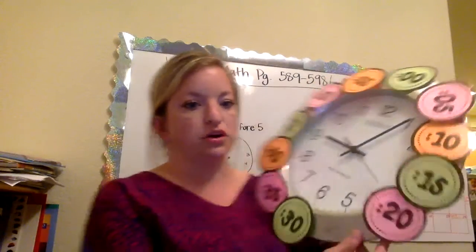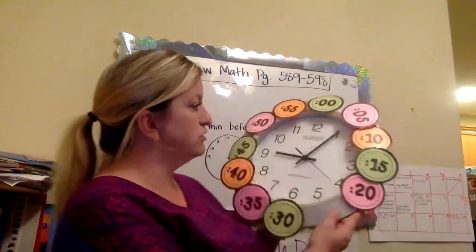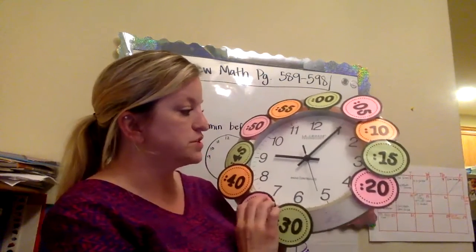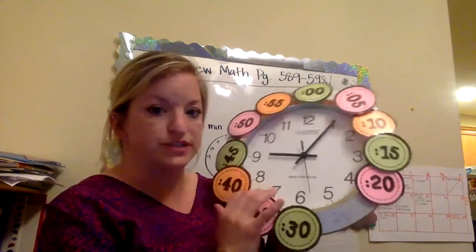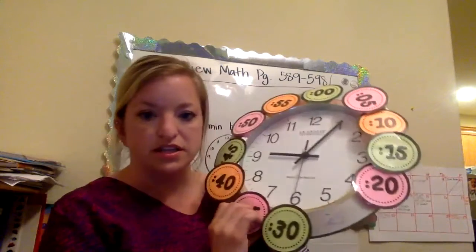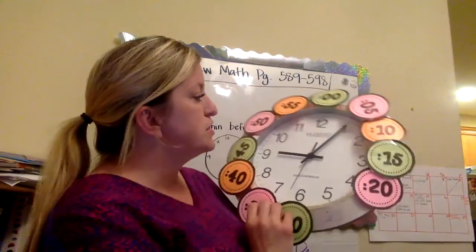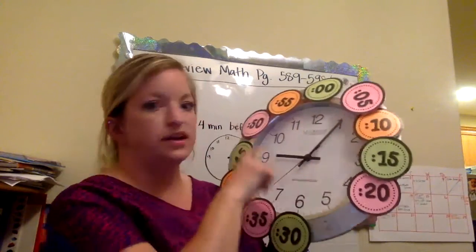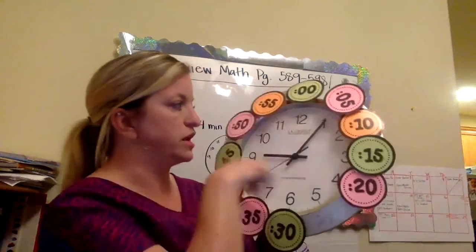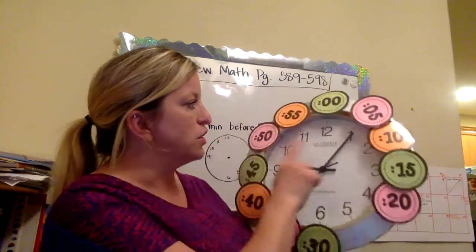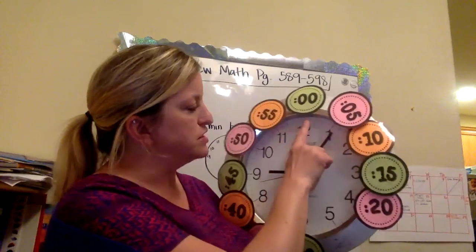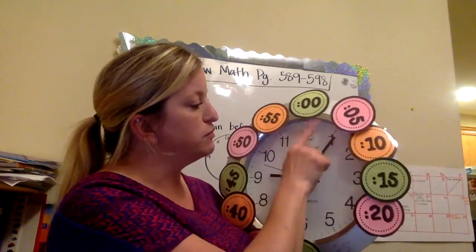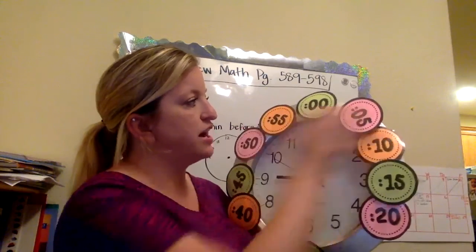So on your clock you have 12 big numbers or lines and those represent the 12 hours. There's 12 hours in the morning which is a.m. and 12 hours in the afternoon which is p.m. So it just repeats. It's a big pattern. It starts at 12 and it ends at 12 and then it keeps going and going. Every one of these little lines on the clock is one minute. When you get from one number to the next it's five minutes.